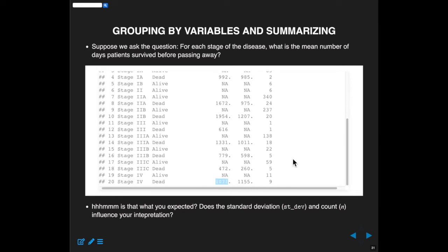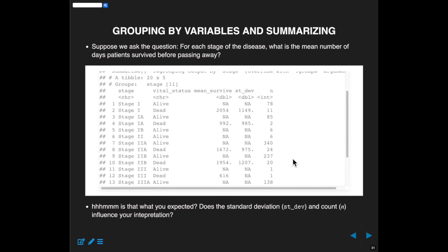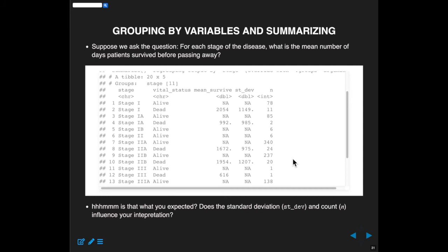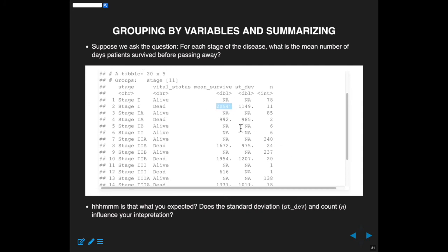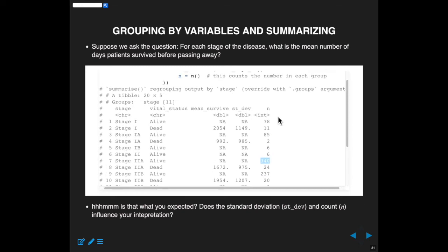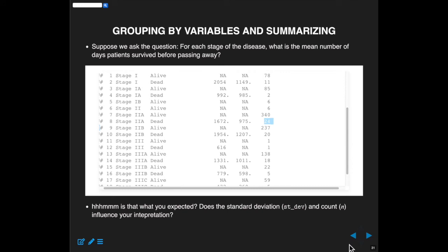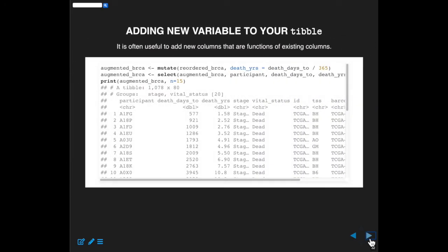Looking at the results, stage 1 is very high because it's not a very progressed disease, and it's about half that at stage four. Some intermediate values look a bit strange — the standard deviation might help explain deviations from what you'd expect. It's handy to add new variables that are functions of existing columns. For example, death_days_to is the number of days to death, but we could estimate death_years as death_days_to divided by 365.